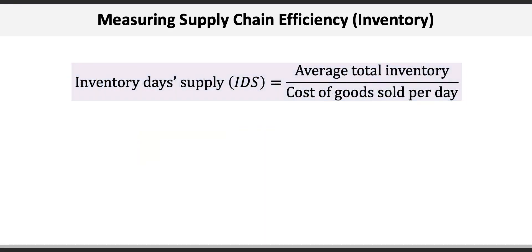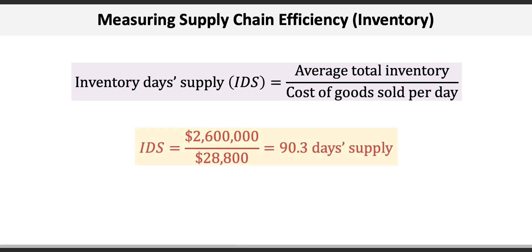Now we can calculate inventory day supply, or IDS, which equals average total inventory divided by cost of goods sold per day, which we just calculated. IDS equals 2.6 million average inventory divided by 28,800 cost of goods sold per day, to get 90.3 days.